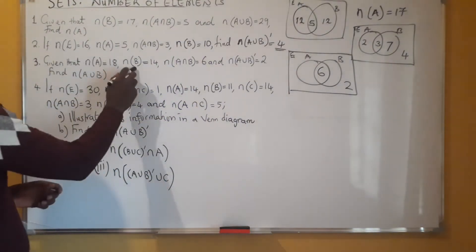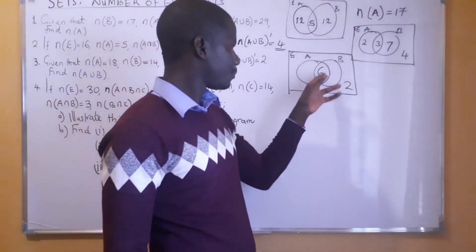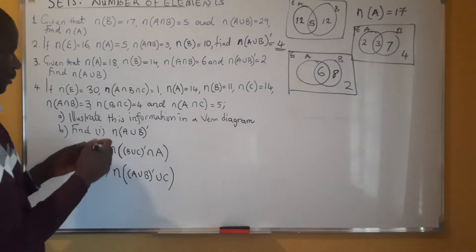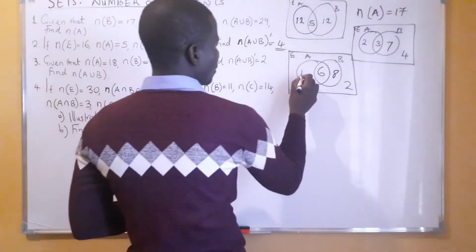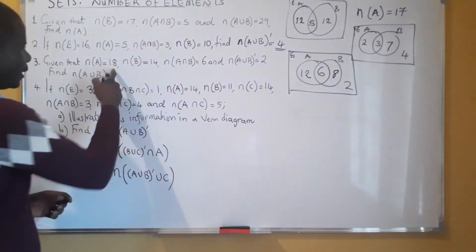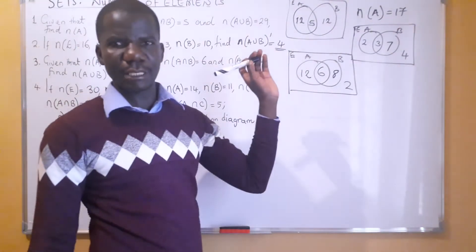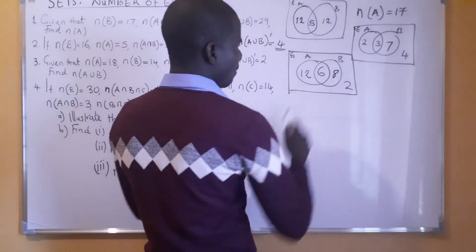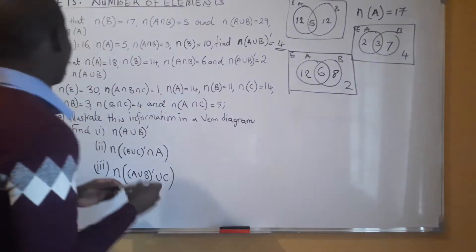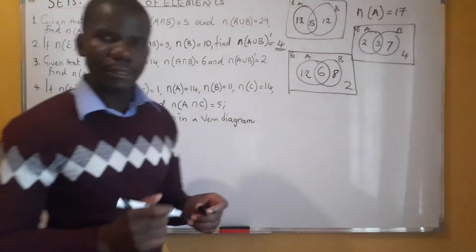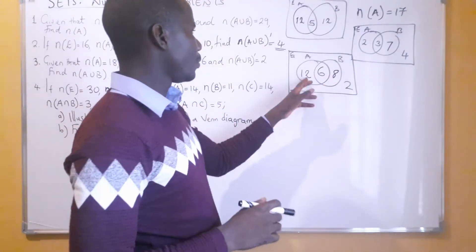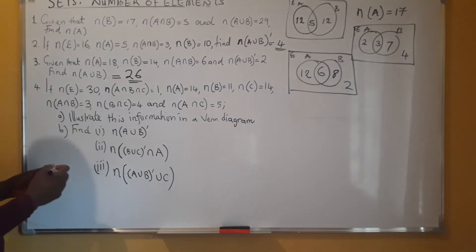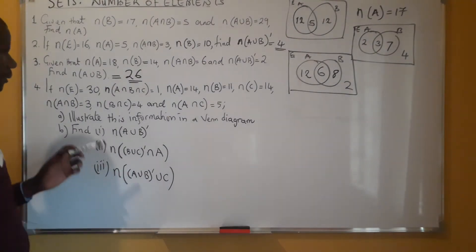Now we come to B. B should have 14 elements; we already have 6, so we subtract to get 8. A should have 18 elements; subtract 6 from 18, you get 12. Having done this, we can answer the question — the union of A and B, the elements found in A and B. These are number of elements. So we add these: 12 plus 8 plus 6 gives us 26. We are looking at the union, so the answer is 26.